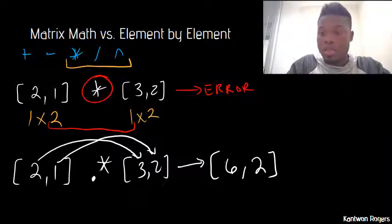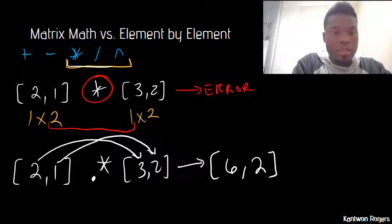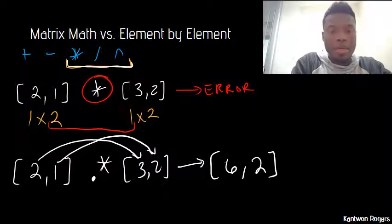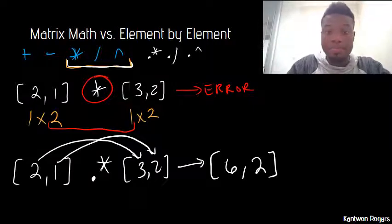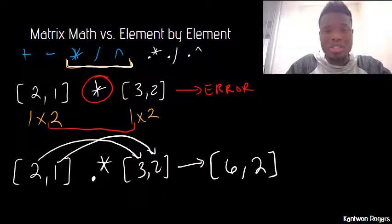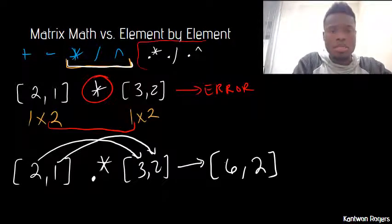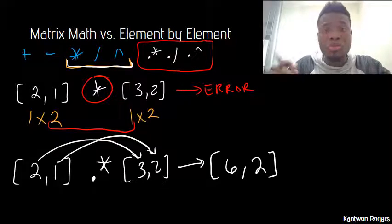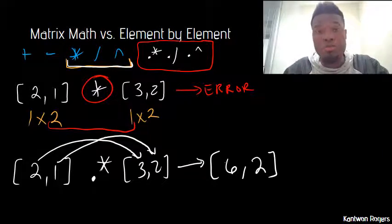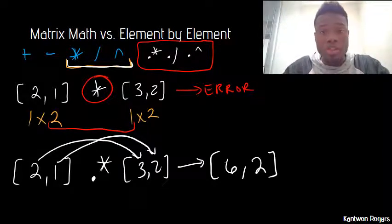These last three operations can also be written as dot multiply, dot divide, and dot caret. It's good practice, or just to keep things simple in your head, it's good practice to always use these. Unless you know for a fact that you want to do matrix operations, you can just use dot multiply, dot divide, and dot caret on everything.